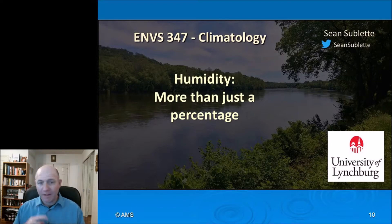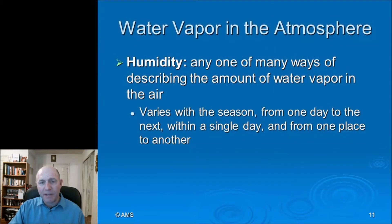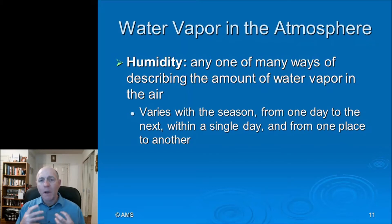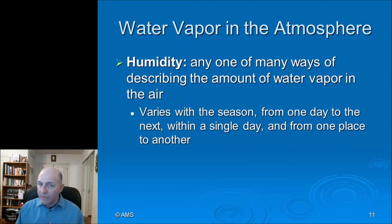Relative humidity is probably the most familiar term, but it's a very specific way to express moisture in the atmosphere. There are many ways to describe water vapor in the air — and remember that water vapor is an invisible gas. Water vapor is not clouds; the visible clouds are made of liquid water droplets or ice crystals. The amount of humidity in the air varies tremendously from season to season and place to place.